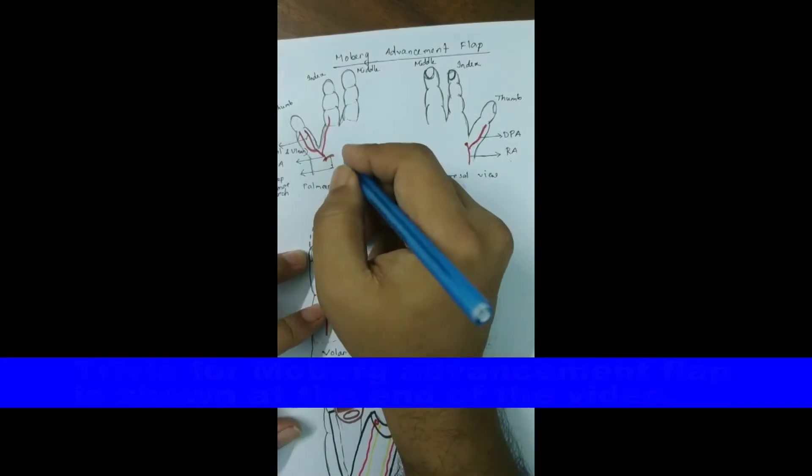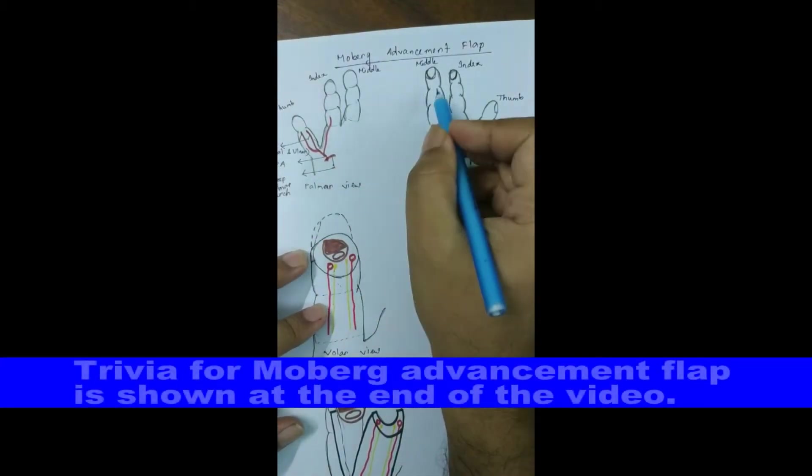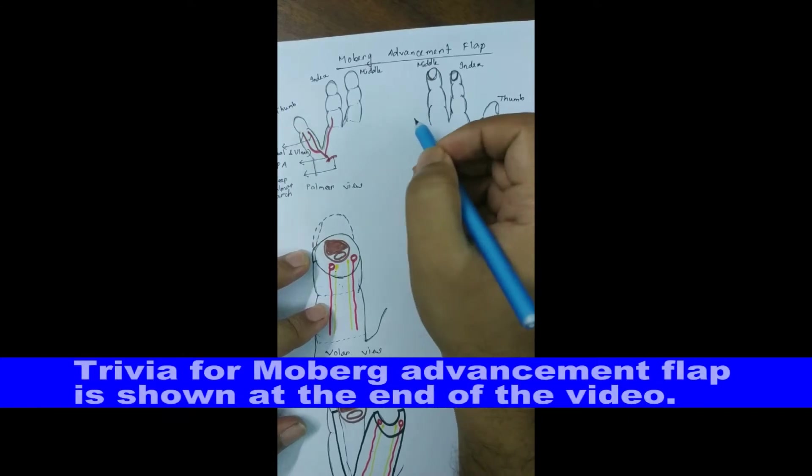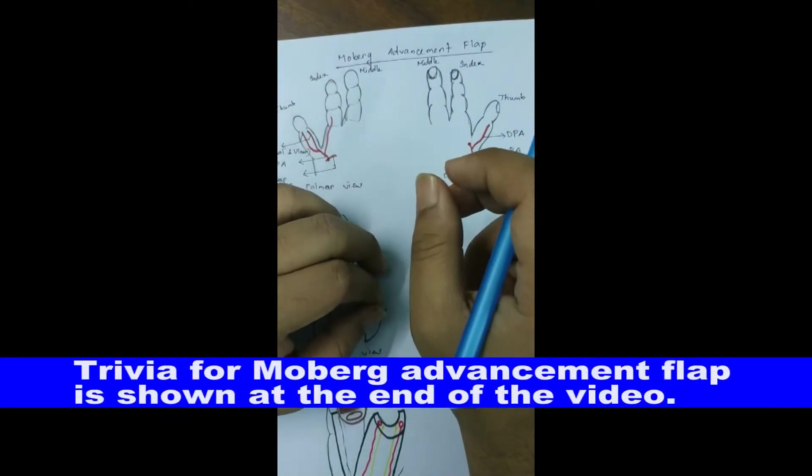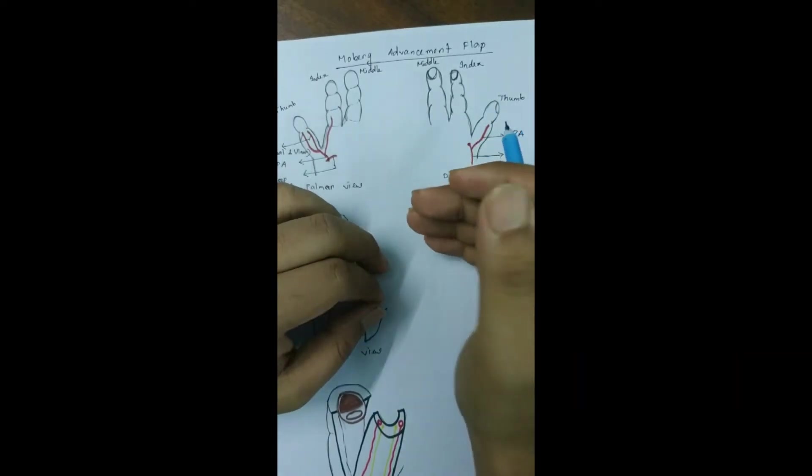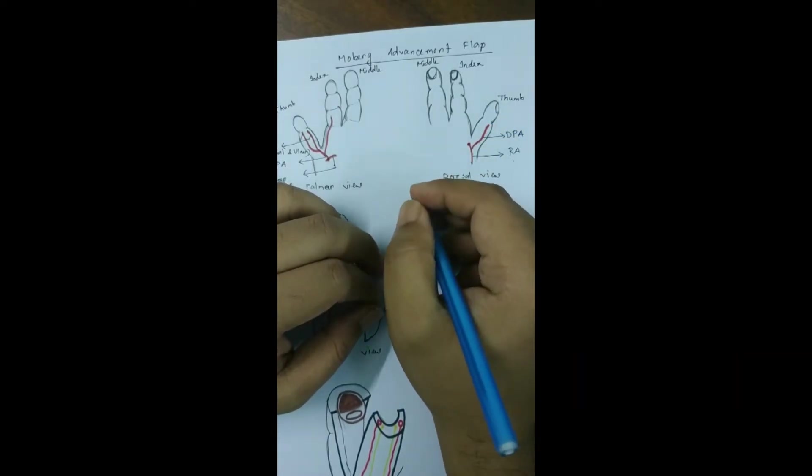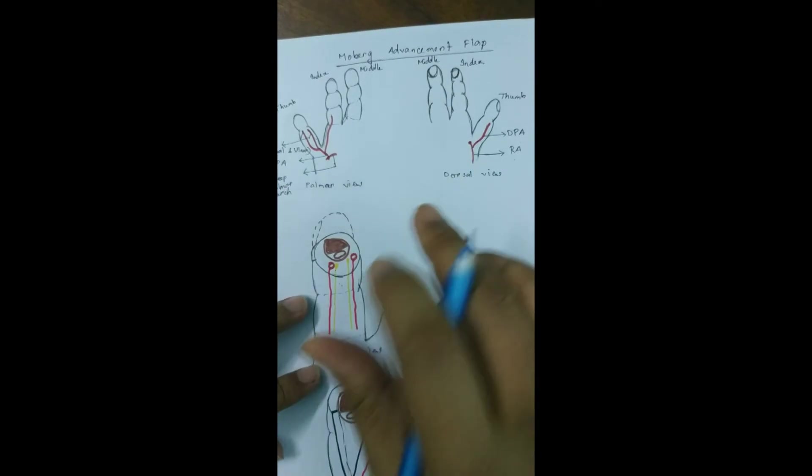Today we are going to talk about the Moberg advancement flap. It is used to cover the soft tissue defect of the thumb tip. It is basically an advancement flap. Before discussing Moberg flap we need to know the unique blood supply of the thumb.